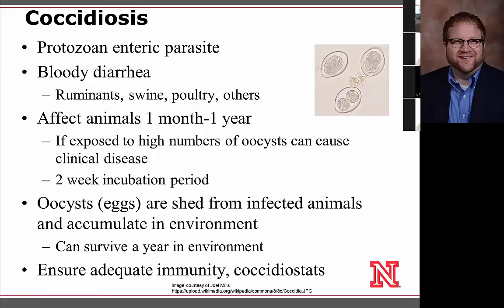Coccidia or coccidial parasites are the final pathogens I'll discuss — another protozoan parasite. They cause bloody diarrhea or bloody scours in a wide range of hosts including ruminants, swine, poultry, and others, with each animal species having its own specific Coccidia. Animals from one month to one year of age can be infected, with disease severity depending on how many oocysts (parasite eggs) are ingested when young. It takes about two weeks from ingestion until diarrhea develops. Oocyst eggs shed from infected animals can survive up to a year in the environment depending on temperature and humidity. Management includes adequate immunity, good health management, and coccidiostats — drugs that prevent coccidial infection.